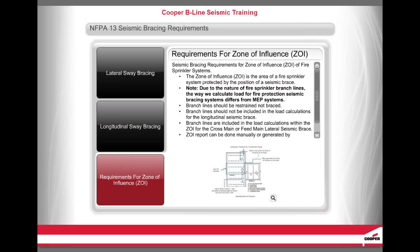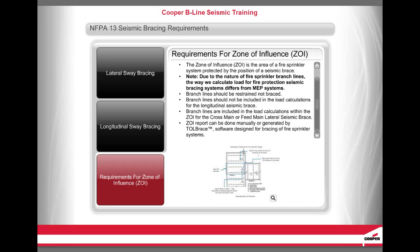The Zone of Influence is the area of a fire sprinkler system protected by the position of a seismic brace. Due to the nature of fire sprinkler branch lines, the way we calculate load for fire protection seismic bracing systems differs from MEP systems. Branch lines should be restrained, not braced, and should not be included in the load calculations for the longitudinal seismic brace. Branch lines are included in the load calculations within the ZOI for the cross-main or feed-main lateral seismic brace. The ZOI report can be done manually or generated by Tolbrace software designed for bracing of fire sprinkler systems.